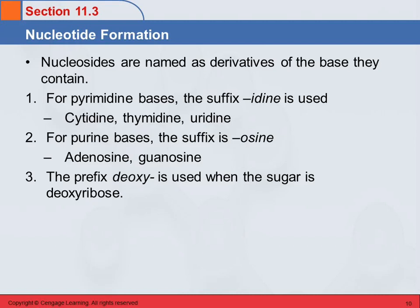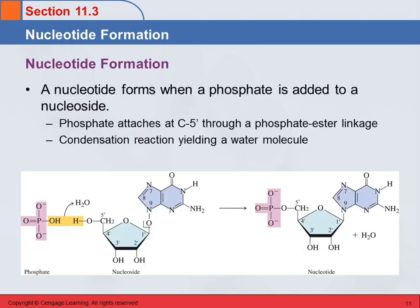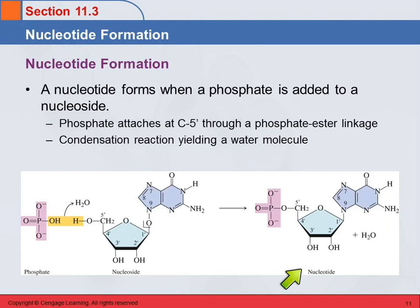If the sugar is deoxyribose, then we add 'deoxy' as a prefix, so you can have deoxycytidine, or you could have just cytidine. Nucleotide formation is when we take the nucleoside — the sugar and the base — and add a phosphate group. The phosphate group attaches onto the 5' carbon. This is a phosphoester linkage, and now we've got the nucleotide. This is also a condensation reaction, and we get another water molecule coming out. This would be RNA, because this is not deoxy.